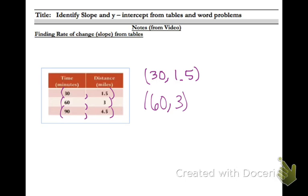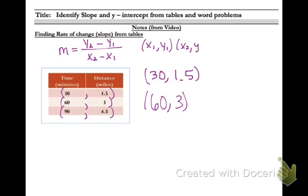Okay, so we're going to use our formula. m equals — so your slope equals y2 minus y1 over x2 minus x1. So if you're given two points, you label them x1, y1, and x2, y2.